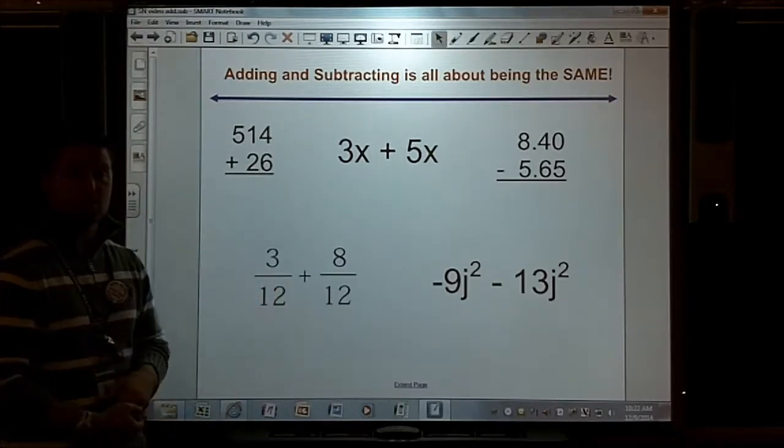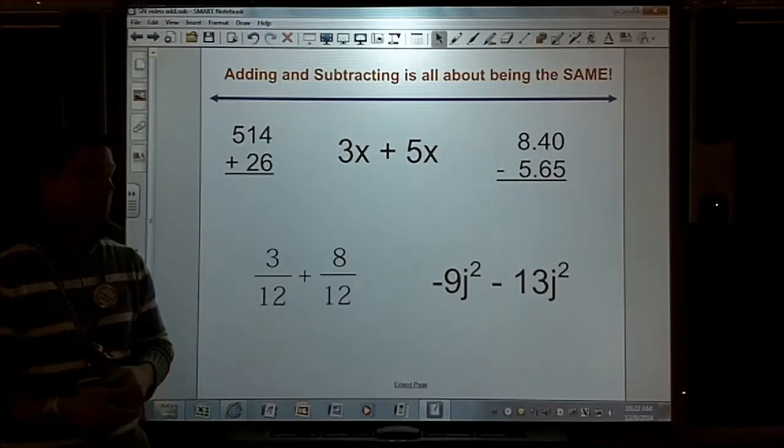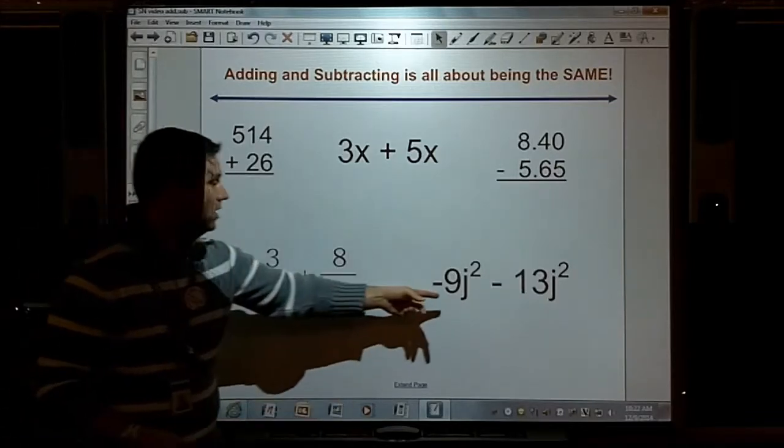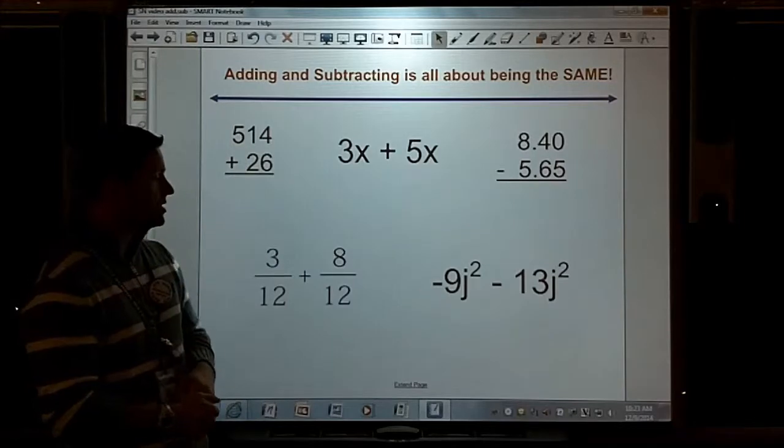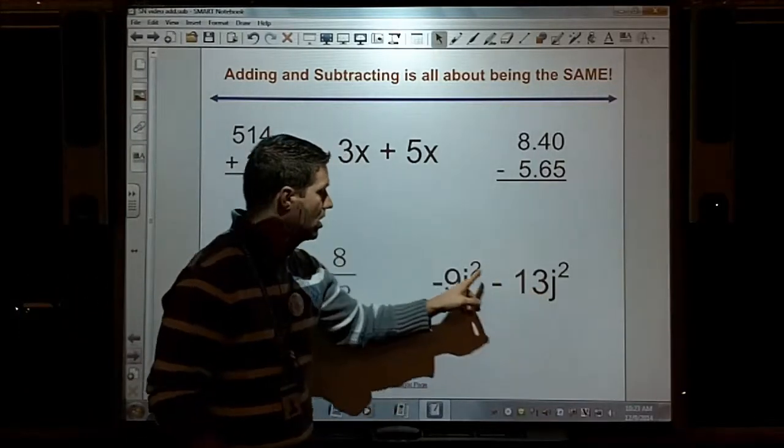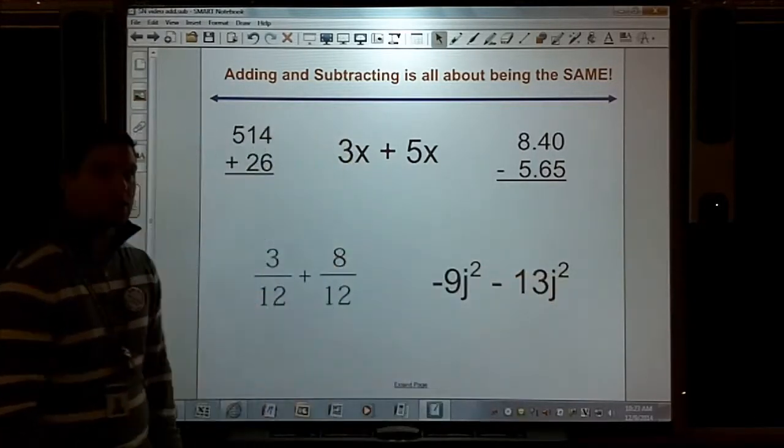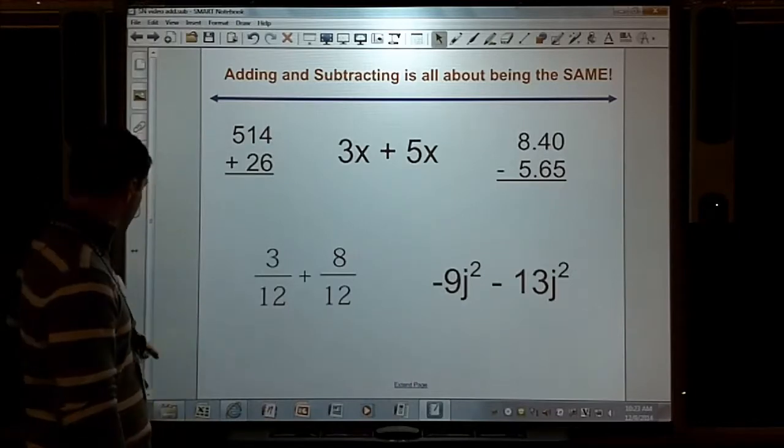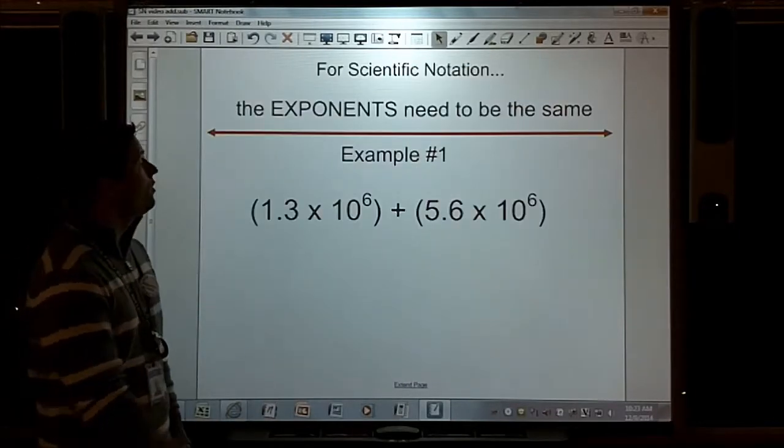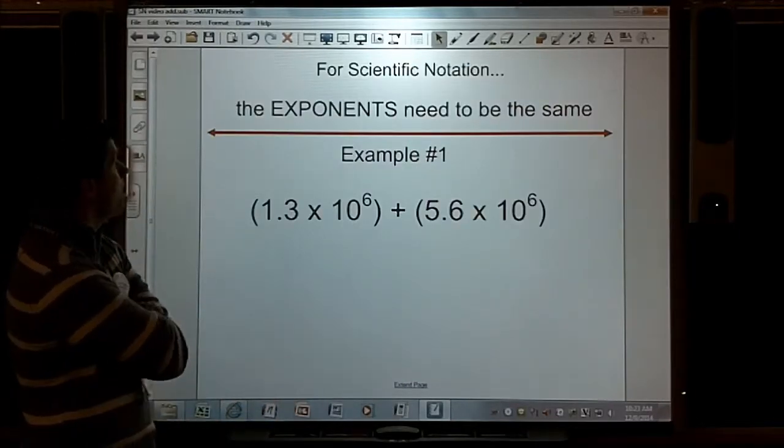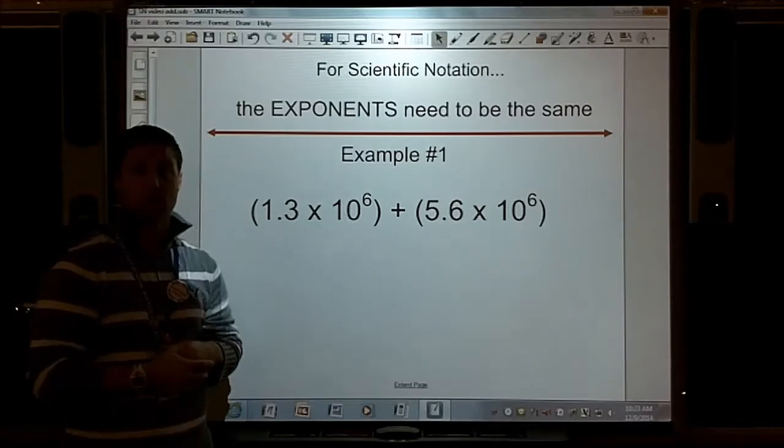When we add fractions, they have to have the same denominator. When we add together like terms, they have to have the same variable with the same exponent. So it's that idea of always being the same. For scientific notation, the exponents need to be the same.